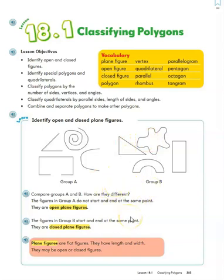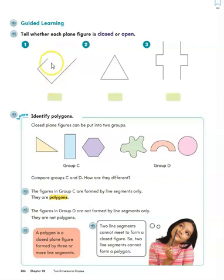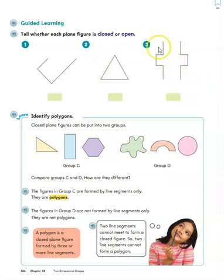So that's all that plane figure means — it's just a flat shape. Up here we have some plane figures and we want to tell if they're open or closed. This one is definitely open; the mouse could run right in. This one is closed — the lines all touch and there's nowhere for the mouse to get in. This one is open; of course the mouse could run right in.